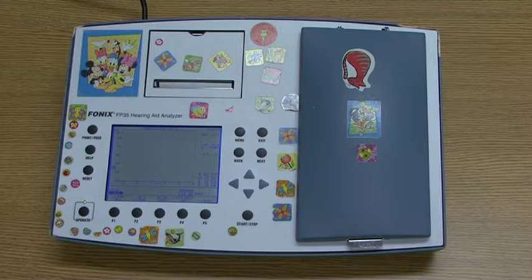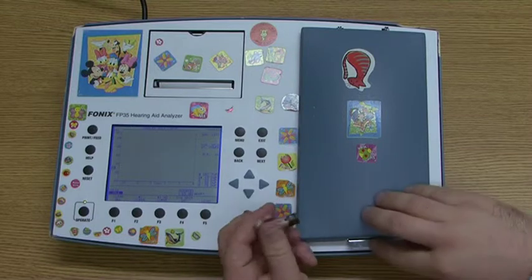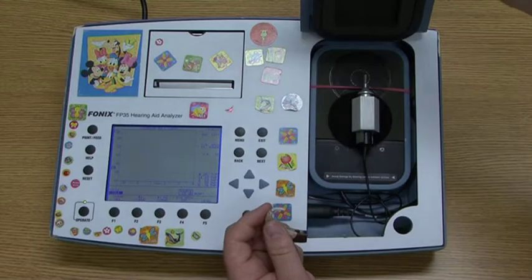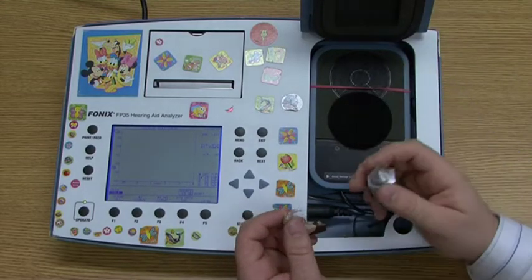Ensure you have connected and prepared for testing before you continue. You will need to prepare the Phonix FP35. Open the lid and connect the hearing aid to the coupler by using the small tubing at the end.